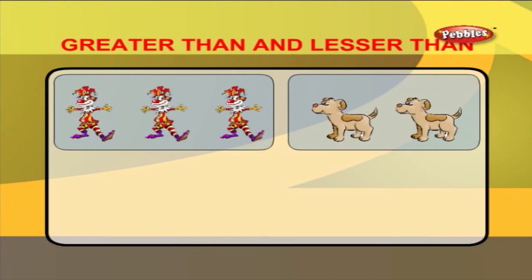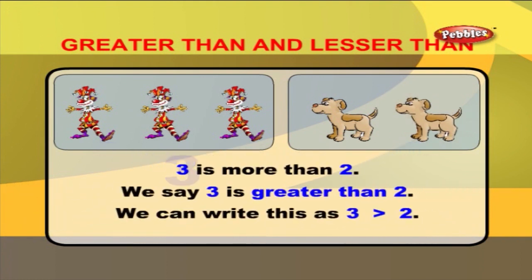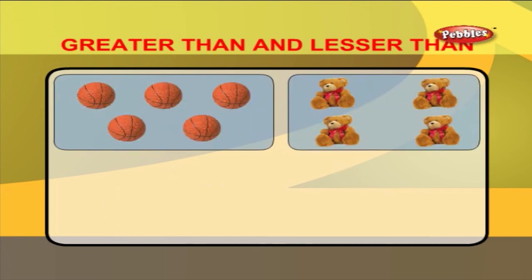The number of jokers are 1, 2, 3. And the number of dogs are 1, 2. 3 is more than 2. In other words, we say 3 is greater than 2. We can write this as 3 greater than 2.